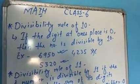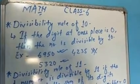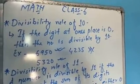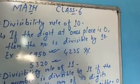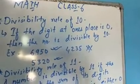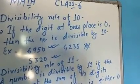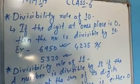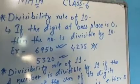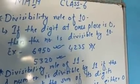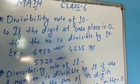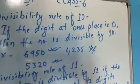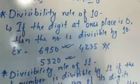So now students, here is divisibility rule of 10. The divisibility rule of 10 is very easy. If the 1s place has 0, then that number is divisible by 10. For example 6950 or 5320. Now, is 4235 divisible by 10? No, it is not divisible by 10 because its 1s place is 5. So for the divisibility rule of 10, the 1s place must have 0.